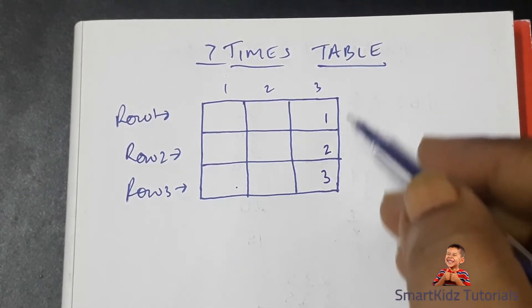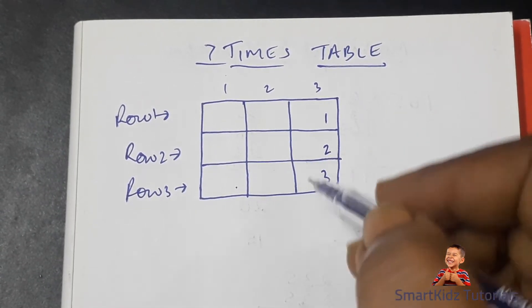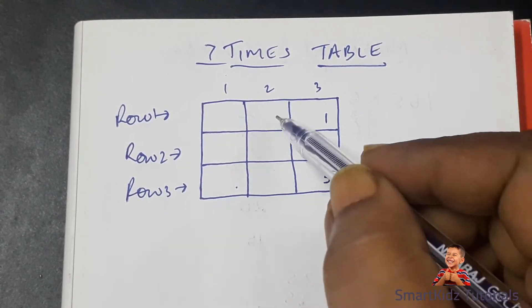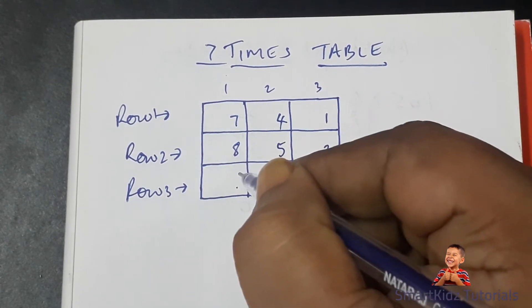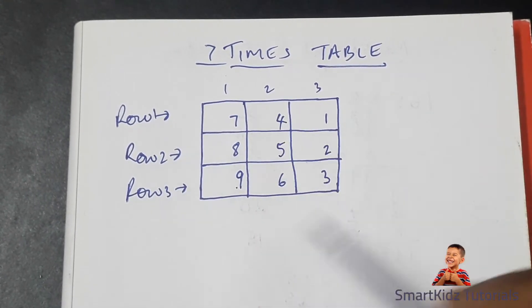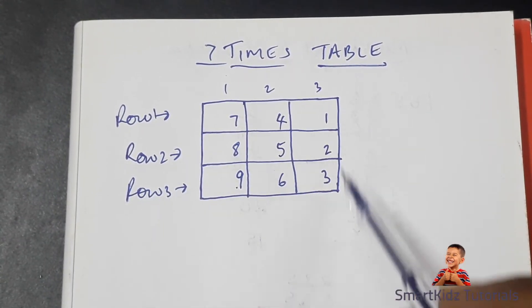Instead of starting from the bottom left cell, we begin from the top right cell. It will be one, two, three. I'm filling up the digits in the units place first and we go up - four, five, six, then seven goes on top, eight, and nine. This is how we get our grid ready.